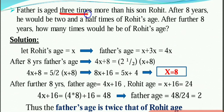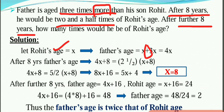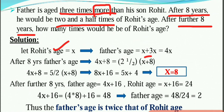Next problem: Sanjay is 10 years old. After 8 years he would be 2 and a half times Rohit's age. After a further 8 years, how many times would he be of Rohit's age? Let Rohit's age be x. Father's age is 3 times his son, which is 3x. But if it says '3 times more than his son,' that means x plus 3x, so the father's age is 4x.